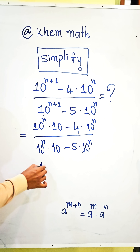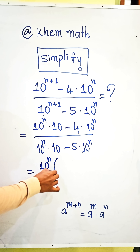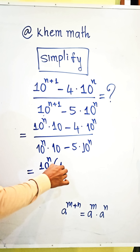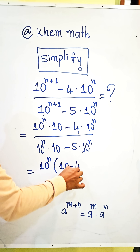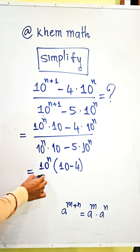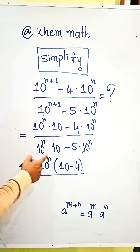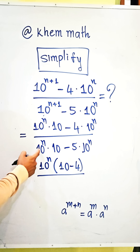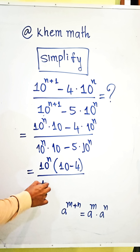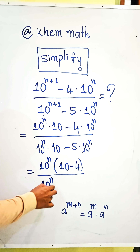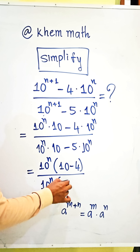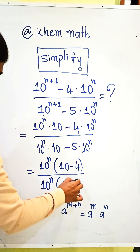We get 10 power n times (10 minus 4) in the numerator. We take 10 power n as a common factor in the denominator and get 10 power n times (10 minus 5).